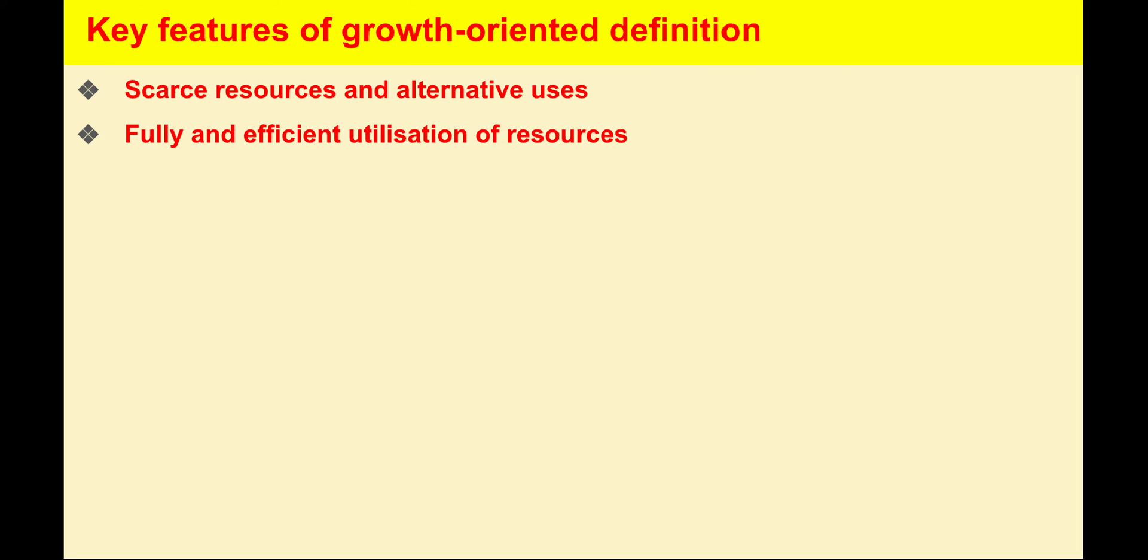Here the two concepts, fully and efficient, are a little bit confusing for students, so let me give clarification for better understanding. The term fully indicates that all the available resources will be employed so that no resources will remain unutilized. For example, in a rural village like Sinapali, 50 workers are available. If the 50 workers are totally engaged in any economic activities without making them unemployed, then we say that there is full utilization of the resources.